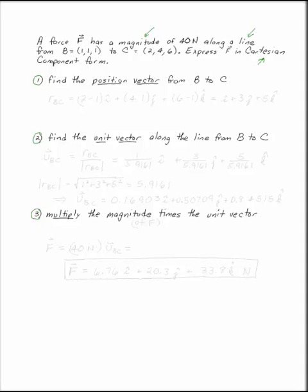To find the position vector from B to C, you want to take the Cartesian points of C and subtract the Cartesian points of B. So the position vector from B to C is two minus one in the I direction, plus four minus one in the J direction, plus six minus one in the K direction. So your position vector looks like I plus three J plus five K.